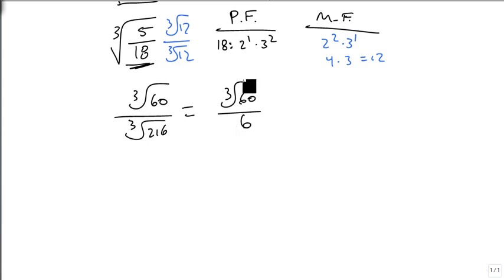And again, we're done, because the cube root of 60 doesn't simplify. It has two 2s, one 3, and one 5. So nothing comes out. And there's nothing else on top to simplify with, so we get our answer.